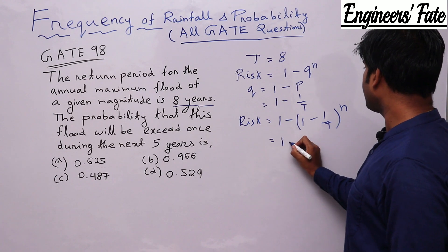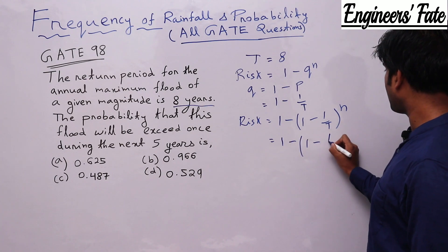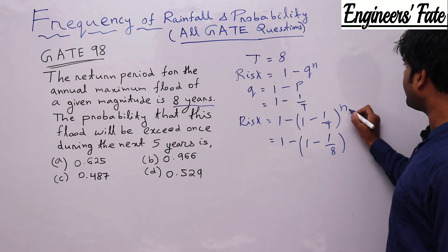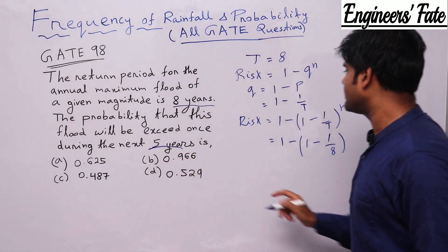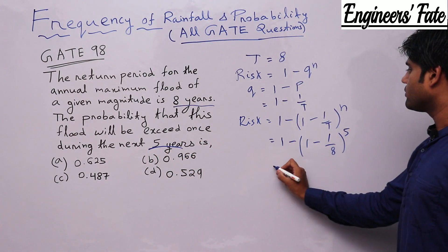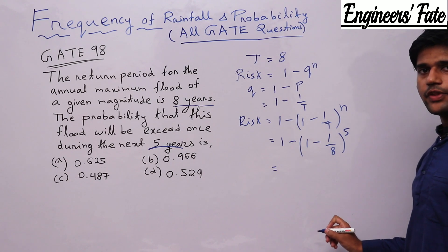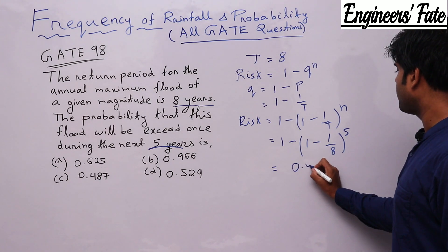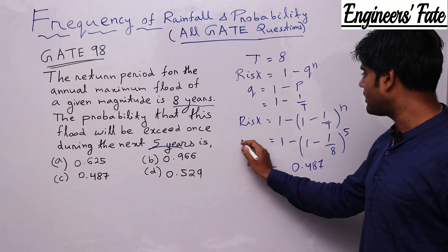So 1 minus 1 minus 1 by 8 to the power N is given as for the next 5 years. So N equal to 5. So if you solve this thing you will get 0.487. So the answer is C.